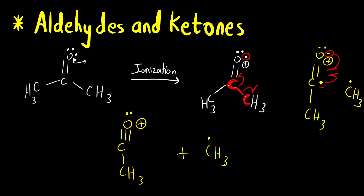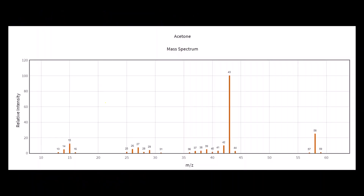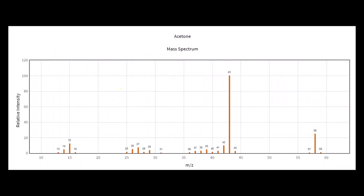For the m/z of the charged fragment from acetone: we have two carbons, three hydrogens, and one oxygen — C₂H₃O. So: (2×12) + (3×1) + (1×16) = 24 + 3 + 16 = 43. At m/z = 43, we get the base peak for acetone. Looking at the mass spectrum, the base peak is indeed at 43, confirming the answer.